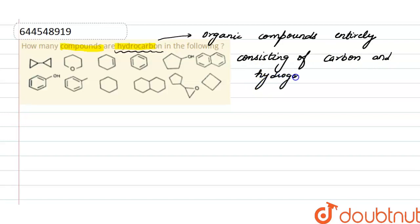That means in that compound we only have carbon and hydrogen as elements. So we'll take each compound. In first compound we have carbon and hydrogen, so this is a hydrocarbon. In second compound oxygen is present, so this is not a hydrocarbon.